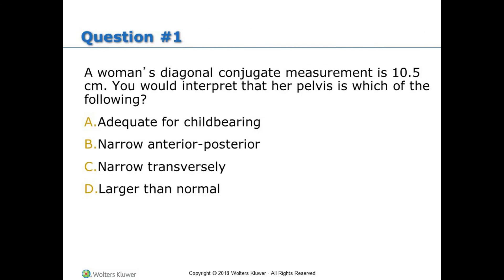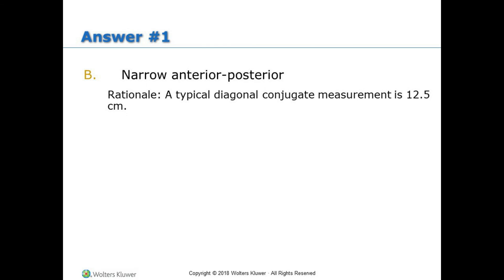Question 1: A woman's diagonal conjugate measurement is 10.5 centimeters. You would interpret that her pelvis is which of the following? A) Adequate for childbearing. B) Narrow anterior-posterior. C) Narrow transversely. D) Larger than normal. Answer 1: B, Narrow anterior-posterior. Rationale: A typical diagonal conjugate measurement is 12.5 centimeters.